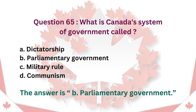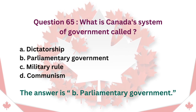Question 65: What is Canada's system of government called? A. Dictatorship. B. Parliamentary government. C. Military rule. D. Communism. The answer is B. Parliamentary government.